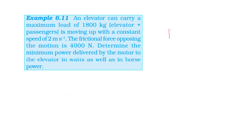This is the elevator with passengers inside. The rope moves with a speed of 2 m per second. Since speed is constant and direction is constant, velocity is constant, therefore acceleration is zero.